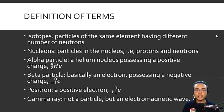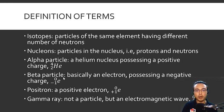The beta particle is basically an electron possessing a negative charge. It contains no protons or neutrons, so its mass number is zero, and the bottom number is negative one, representing the electron. The positron is the opposite of the beta particle — a positive electron. Its mass number is also zero, but the bottom number is positive one, representing the positive nature of the positron.